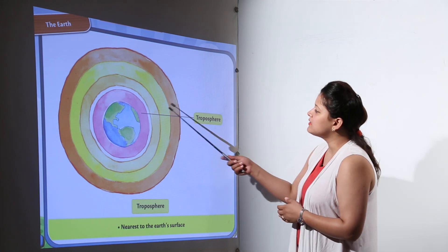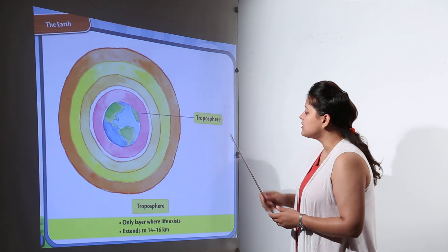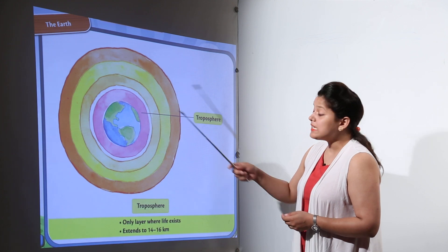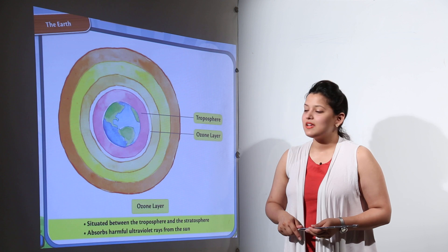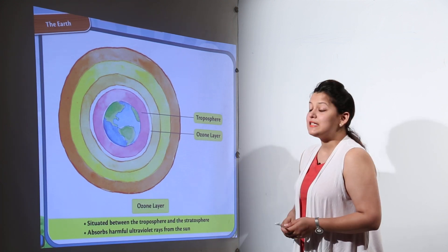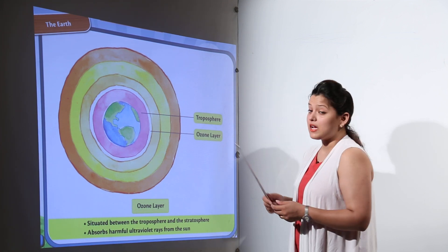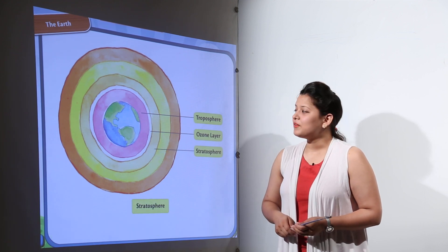We can see here the first layer, that is the troposphere. The troposphere is the layer where life exists and it extends from 14 to up to 16 kilometers above the Earth. The layer next to troposphere is the ozone layer. We all have heard about it that it protects us from the harmful UV radiations of the sun, right?